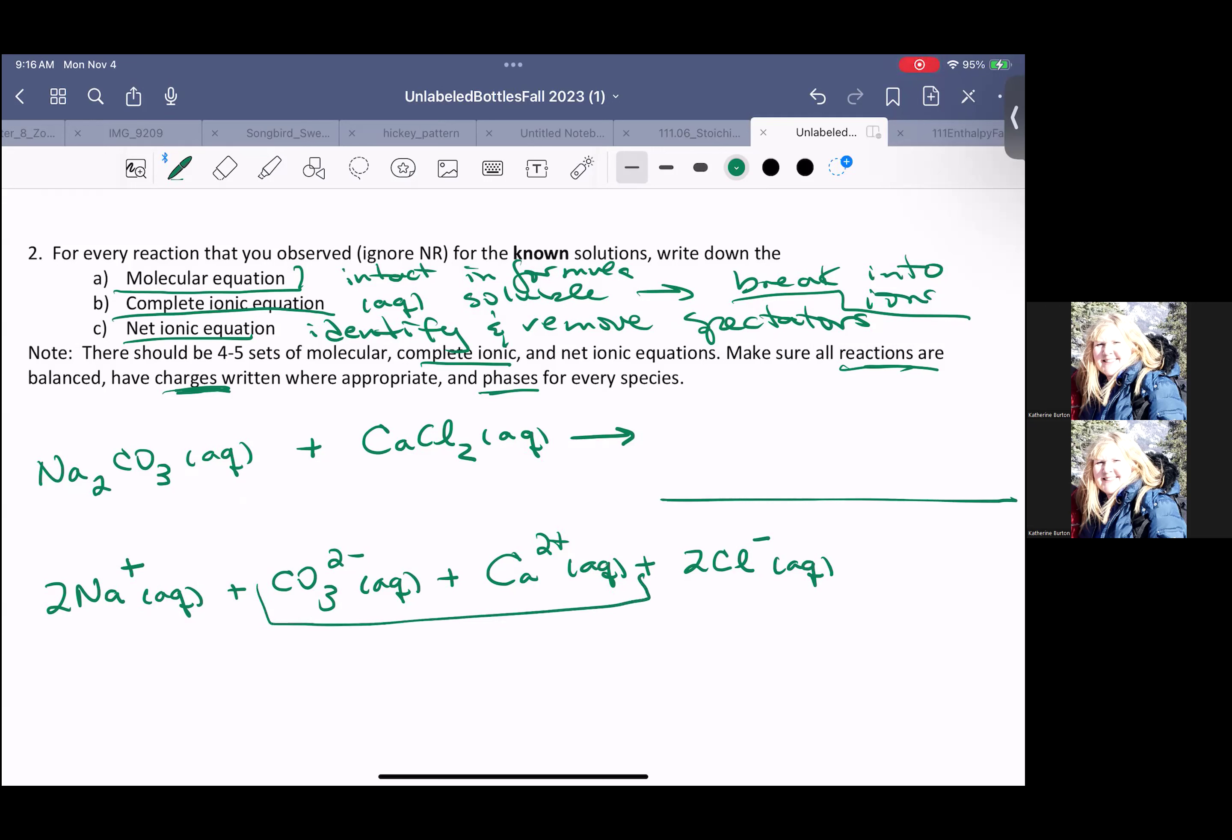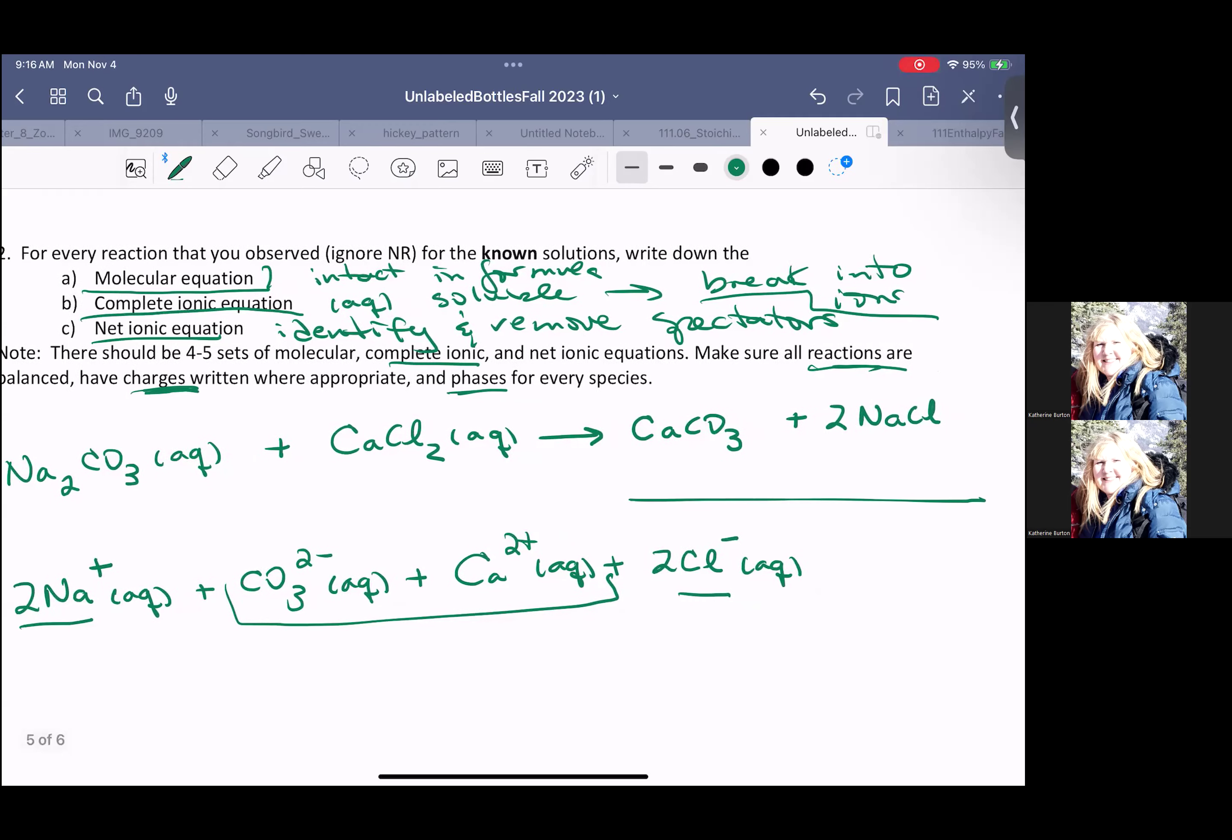I'm going to put together the calcium and the carbonate, and I'm going to make calcium carbonate. And remember, in our total equation, our total molecular, we put everything intact, even if it really is soluble. My sodium, I'm going to put with my chloride. That two was going to go in front because the correct ratio for sodium chloride is one to one. And that's going to be my formula.